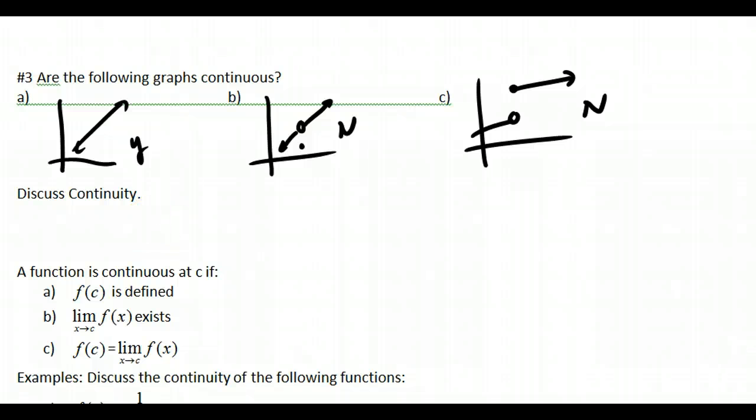If you want to write some of those ideas down there, you may. Now, the formal definition is that f of c is defined. A function is continuous at c if f of c is defined. So if I had some value c here, f of c is defined.